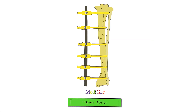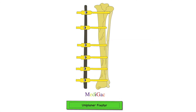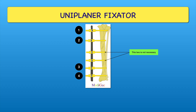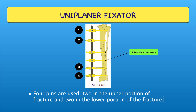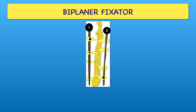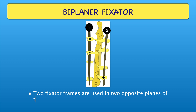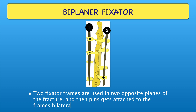The uniplanar fixator uses four pins — two in the upper portion of the fracture and two in the lower portion of the fracture. The biplanar fixator uses two fixator frames in two opposite planes of the fracture, and then pins get attached to the frames bilaterally.